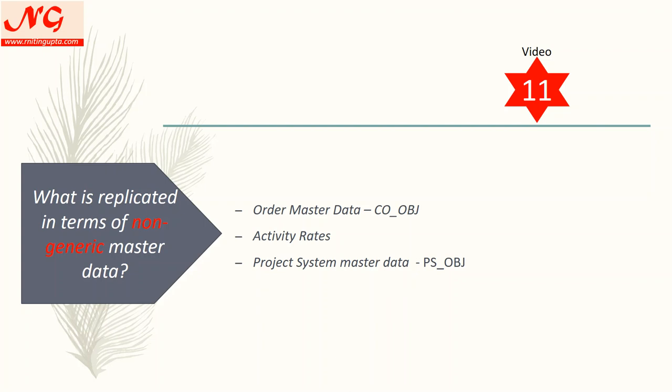The mapping is automatic. You can have an n-to-1 or 1-to-1 definition in the config. For example, if you have 100 internal orders with n-to-1, all will be mapped to one order in Central Finance. With 1-to-1, each order moving from ECC to Central Finance will create a new internal order. Additionally, activity rates move from ECC to Central Finance, and project system master data including WBS elements is also replicated — this is a very recent addition.